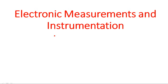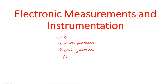Hi everyone, today I would like to start the subject Electronic Measurements and Instrumentation. In this subject we are going to learn what are the various instruments we generally use in the laboratory, like CROs, function generators, signal generators, and various meters like ammeters, voltmeters, and ohmmeters. We are going to discuss all of these instruments we generally use in our day-to-day life or in our laboratory.